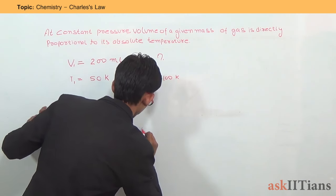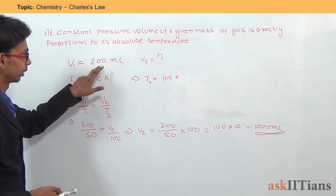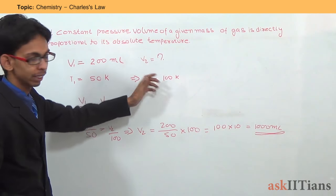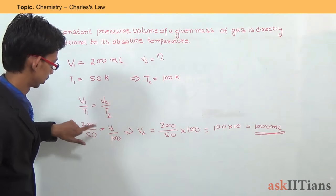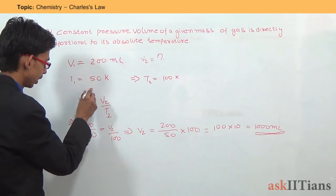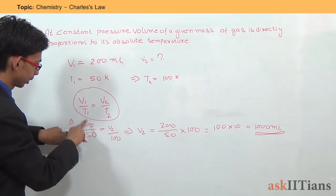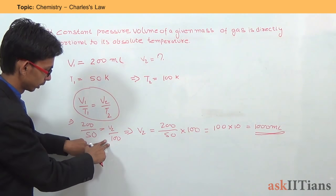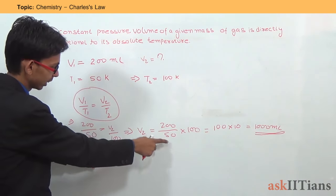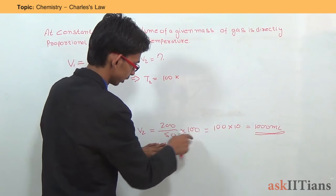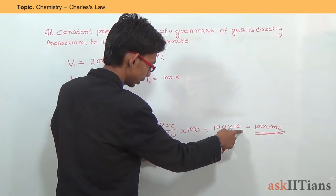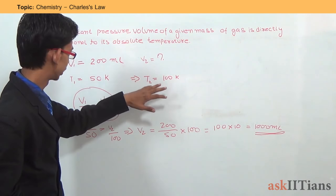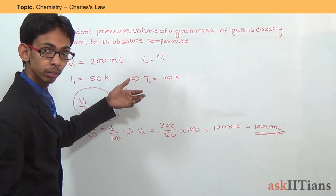Solving this equation, the initial volume V1 was 200 ml when the temperature T1 was 50 Kelvin. We increase the temperature to T2 = 100 Kelvin — that is, we double the temperature. Using V1/T1 = V2/T2, we rearrange to solve for V2: 100 multiplied gives us 1000 ml. So if we double the temperature, the volume increases accordingly.